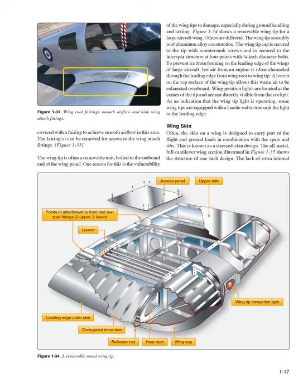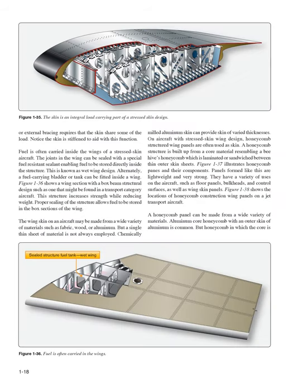Wing skin: often, the skin on a wing is designed to carry part of the flight and ground loads in combination with the spars and ribs — known as a stressed-skin design. Fuel is often carried inside the wings of a stressed-skin aircraft. The joints in the wing can be sealed with a special fuel-resistant sealant enabling fuel to be stored directly inside the structure — known as wet wing design. Alternately, a fuel-carrying bladder or tank can be fitted inside a wing. A wing section with a box beam structural design, such as one found in a transport category aircraft, increases strength while reducing weight. Proper sealing of the structure allows fuel to be stored in the box sections of the wing.